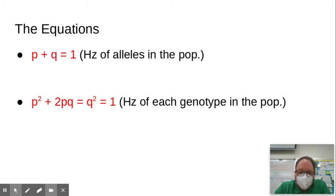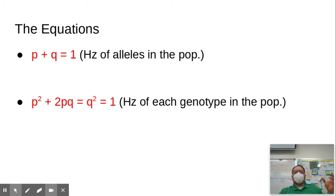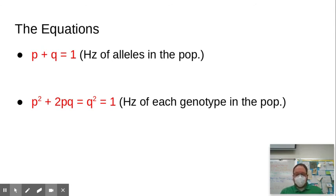This assumes two alleles for a particular gene. The second equation looks at the frequencies of particular genotypes. Since organisms are typically diploid, you've got two copies of an allele, so you can look at the frequency of different genotypes — hence p squared, 2pq, and q squared.